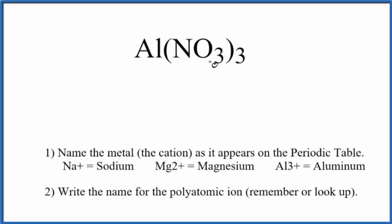To write the name for Al(NO3)3, the first thing we need to realize is we have a polyatomic ion here. This NO3 is called the nitrate ion.